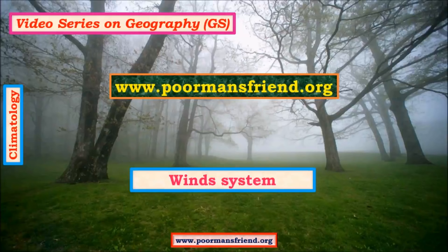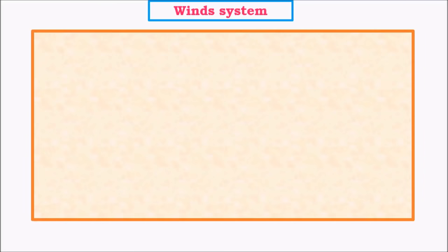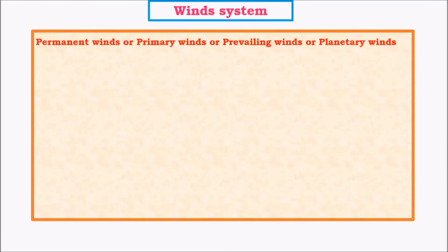Hello friends, welcome to this video series on geography. In my previous video I explained about pressure belts and permanent winds. Permanent winds are a part of the wind system, but I explained them with pressure belts because both are highly related concepts and their origin is more or less dependent on the same factors. Other kinds of wind systems are significantly different from permanent winds. Permanent winds are also called primary winds, prevailing winds, or planetary winds.